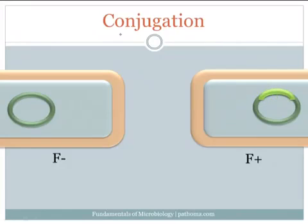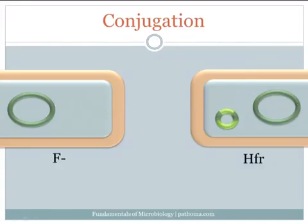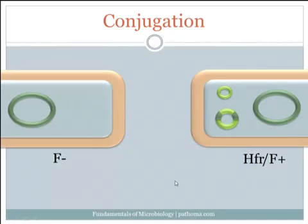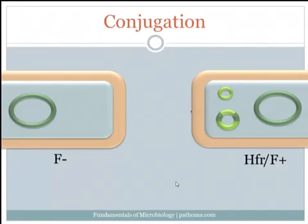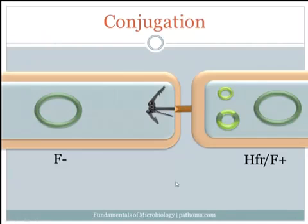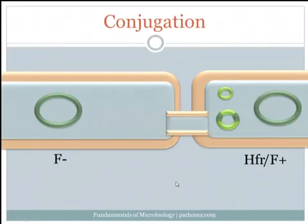If this plasmid is incorporated into the chromosome, then this bacterium is called an HFR cell. What's special about this is that when the plasmid decides to leave the chromosome, it can actually grab and take with it some of the flanking chromosomal genes. Bacteria can possess a special grappling hook structure called a pilus that can reach out, latch onto, and pull in another bacterium. After this F-positive or HFR cell grabs onto the F-minus cell, it forms a cytoplasmic bridge which allows the sharing of plasmids to the F-minus cell.